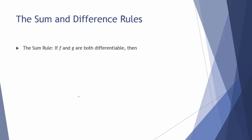Next, let's look at the sum and difference rules. The sum rule says that if f and g are both differentiable, then the derivative of f of x plus g of x is the same as the derivative of f of x plus the derivative of g of x. Basically, you can split a derivative across addition — instead of adding the two functions and then taking the derivative, you can take the derivative of each function separately and add them together, which is generally the easier method.